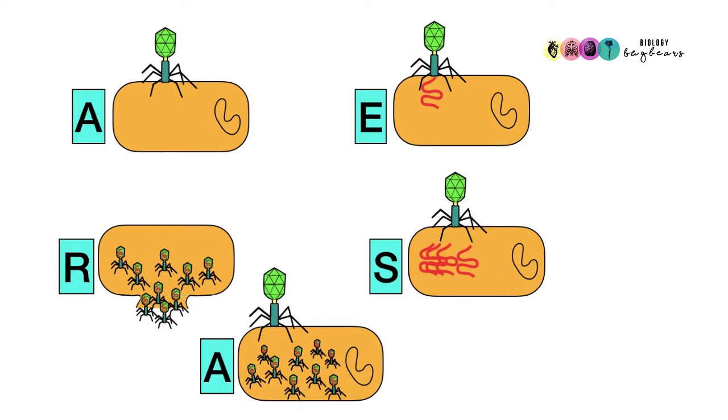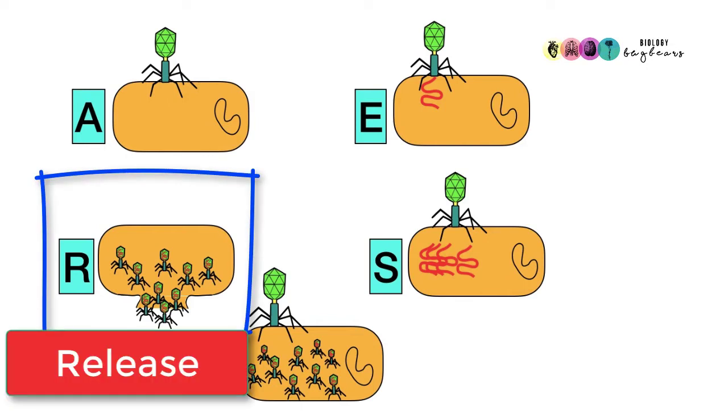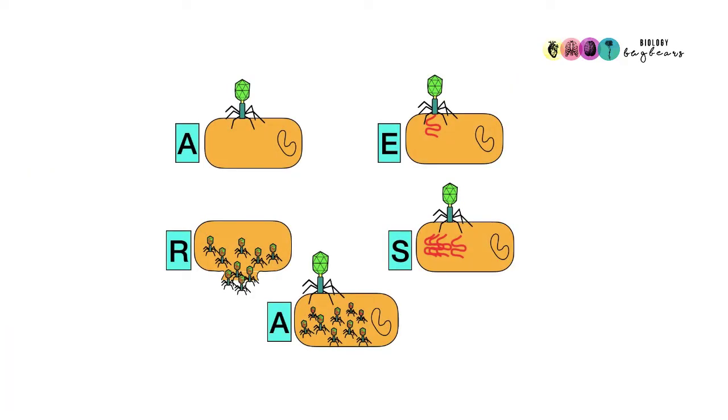The final stage in viral replication is release. This is where the newly assembled viruses are released from the host cell. Sometimes it does involve the death of the host cell, as in lysis, but in some other cases, the viruses do not kill the host cell. So those were the five stages in viral replication.